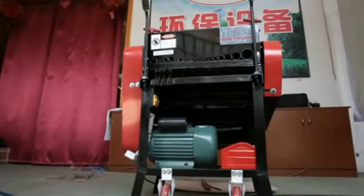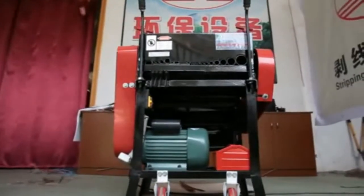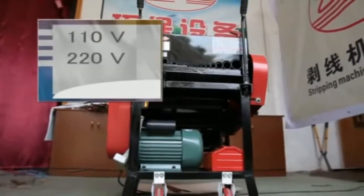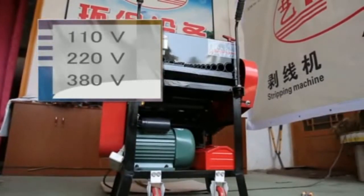The machine is equipped with a trundle and hand shank, which are convenient to move. According to different voltage requirements in different countries, it can be set to 110V, 220V, 380V, etc.